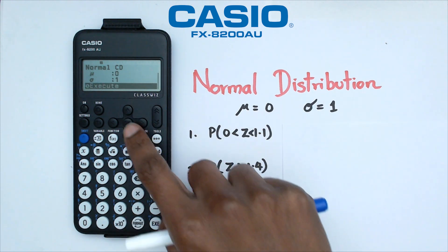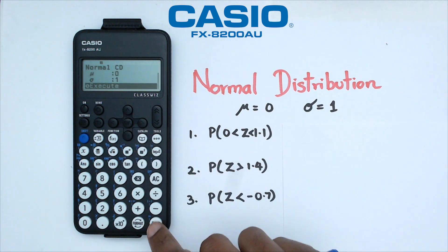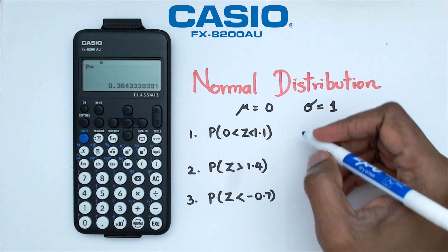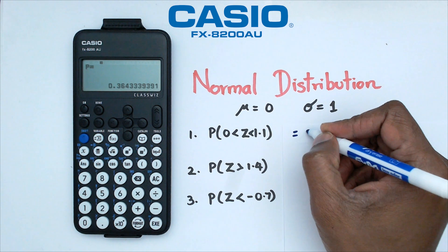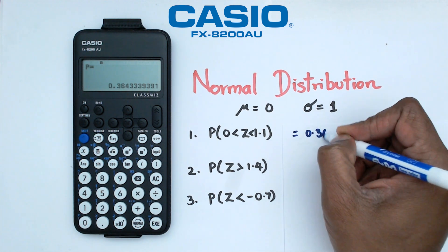And if you go down to the bottom there, we should be able to click on EXE, which should give us what the probability is. So the probability in this case is going to be 0.3643.